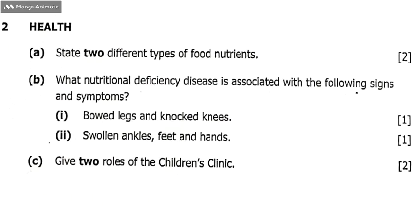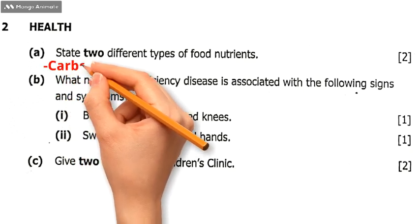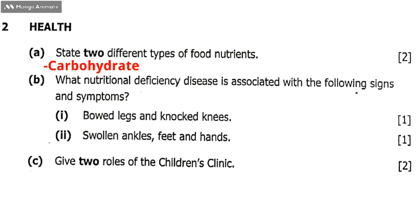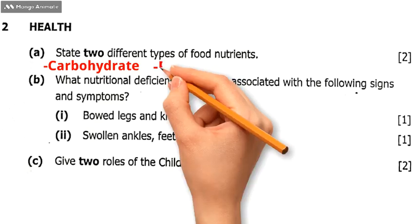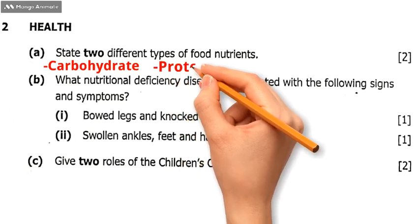Question 2 of section B was as follows: state two different types of food nutrients. Since they want two, I'll give you three. We can talk about carbohydrates — energy-giving nutrients — proteins, and vitamins.